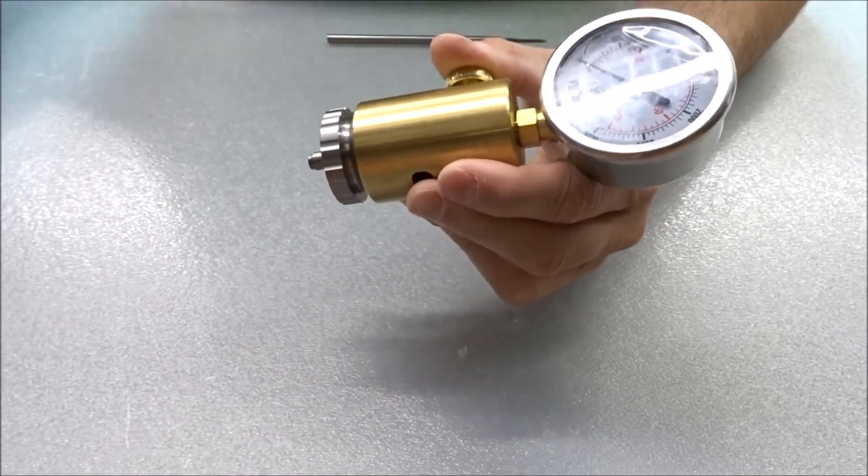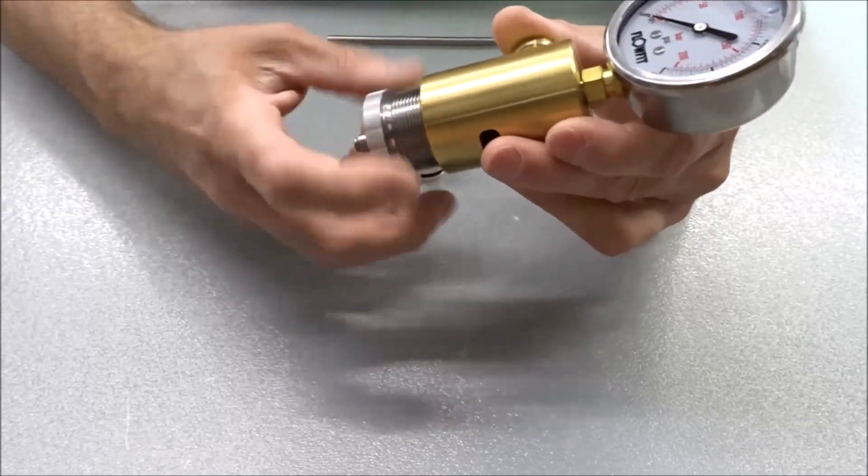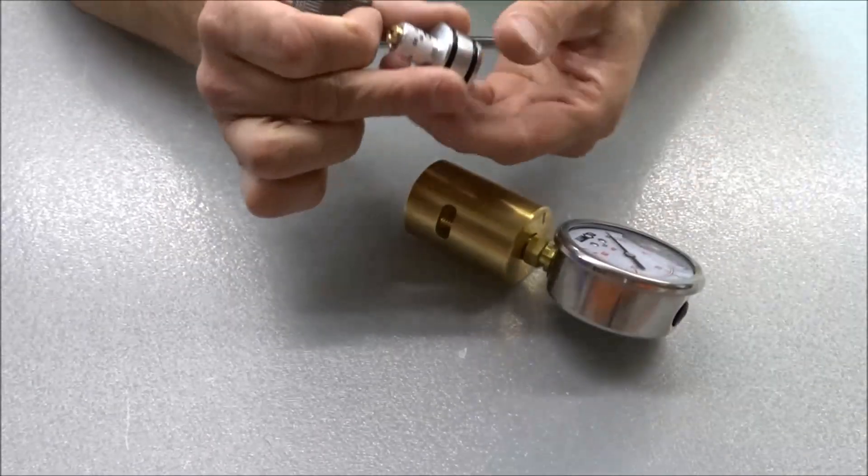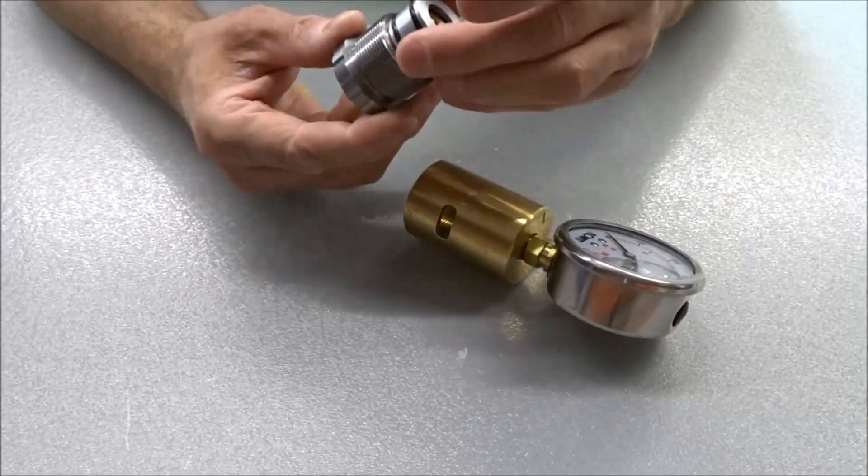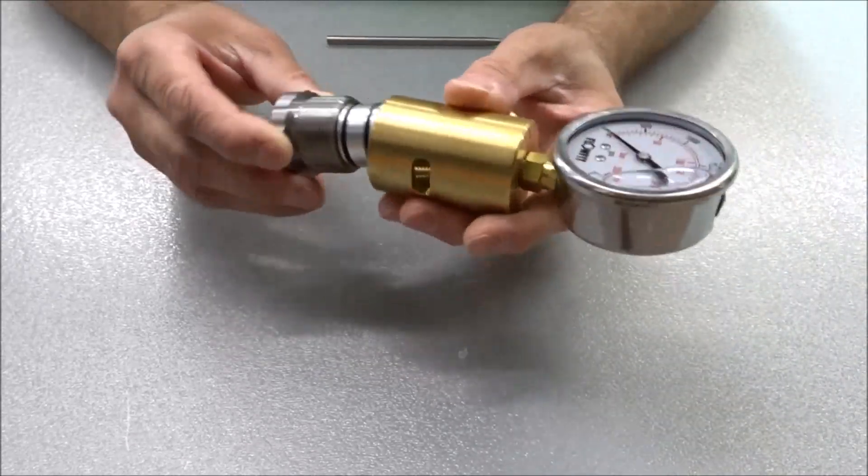You can unscrew the tester in two parts and then you will place the regulator inside the hole of the tester and you can screw it all back on.